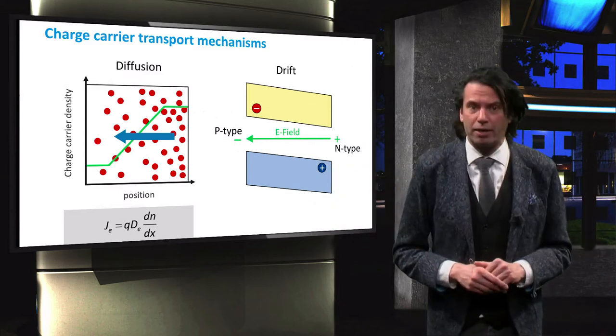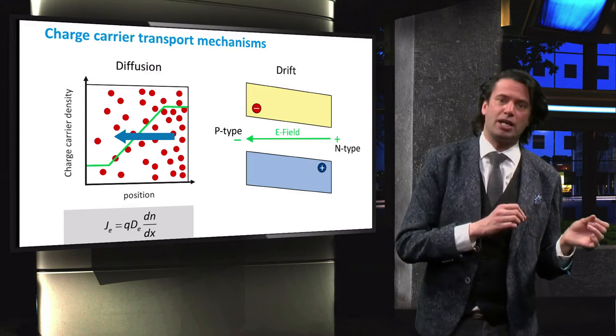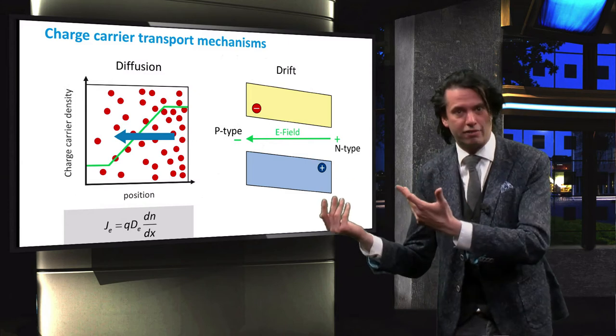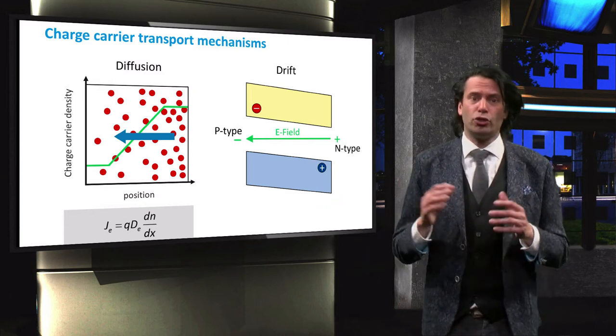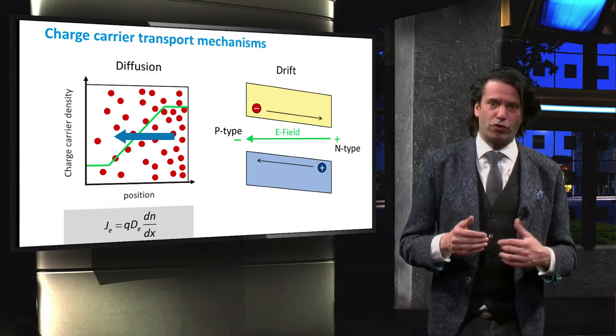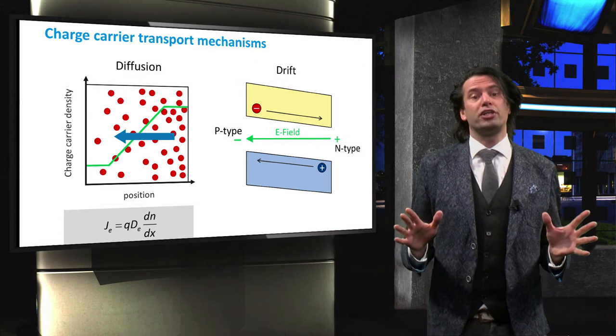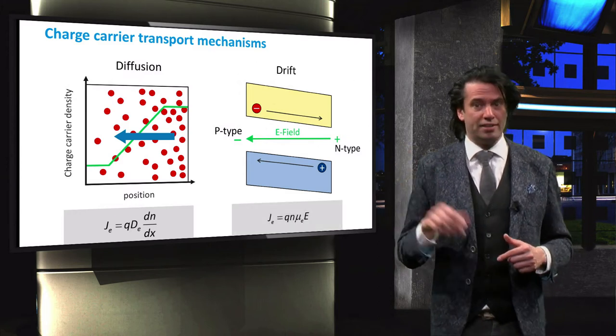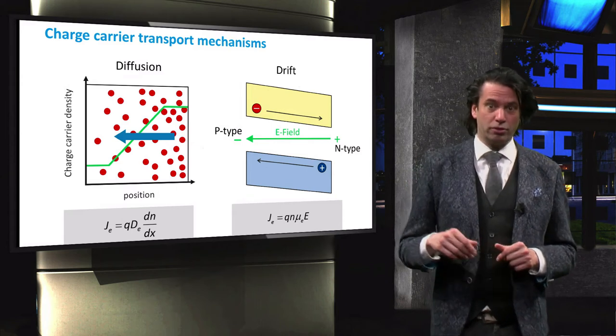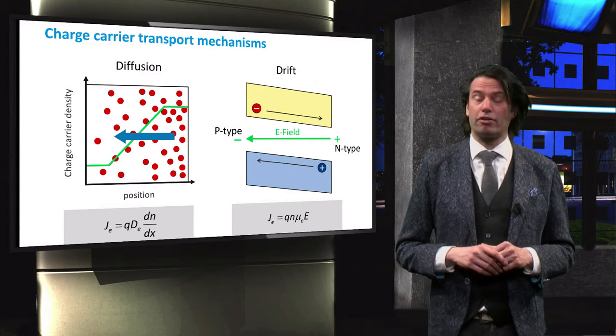A positively charged hole will experience a force in the direction of the electric field. Now, in terms of a band diagram, the electric field flows from the positive n-type region to the negative p-type region, causing a drift of electrons towards the n-type and a drift of holes towards the p-type. The current resulting from the electron drift is described by this equation, where n is the electron concentration, mu is the electron mobility, and e is the electric field strength.